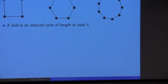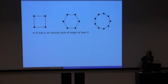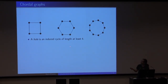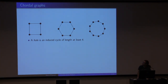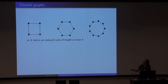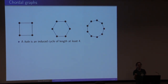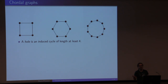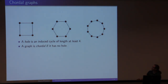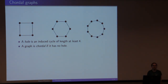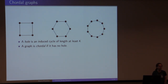Just to be on the same page, let us discuss what a chordal graph is. A chordal graph is a graph without a hole. A hole is an induced cycle of length at least four. So these are holes of length four, six, nine up there. You cannot have an induced subgraph being a cycle longer than a triangle — a chordless cycle.